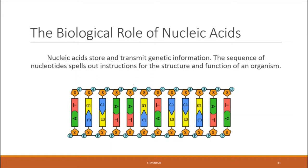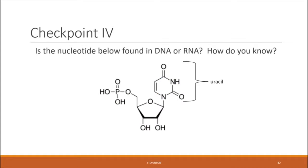What is the biological role of nucleic acids? Nucleic acids store and transmit genetic information. They have the power to do that because the sequence of different nitrogenous bases in their nucleotides — the adenines, guanines, cytosines, thymines, etc. — are able to spell out instructions for how an organism should function and what its structure should look like. We will talk more about this in future chapters. Checkpoint: looking at the nucleotide on screen, tell me whether this building block would be found in DNA or RNA, and explain your reasoning.